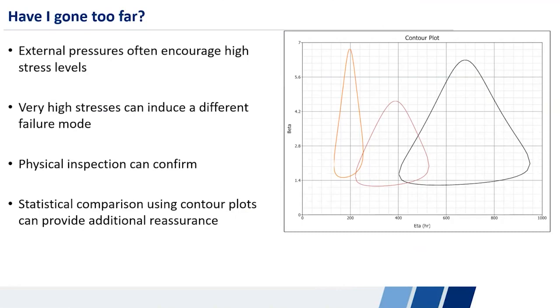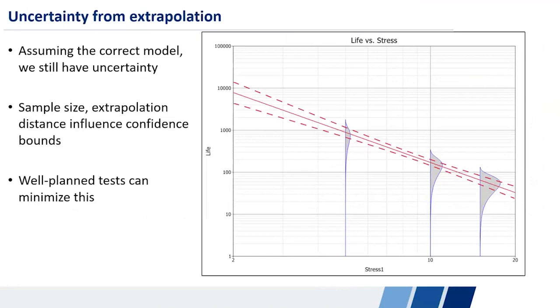So if we've got the right stress range, we've got the right life stress relationship. We're now ready to move on to the first thing that we mentioned here, which is the uncertainty from extrapolation. So even if we've got the right model, even if we've got the right range of stresses, we still have uncertainty in our projections just because of the sample size and the spread in our data.